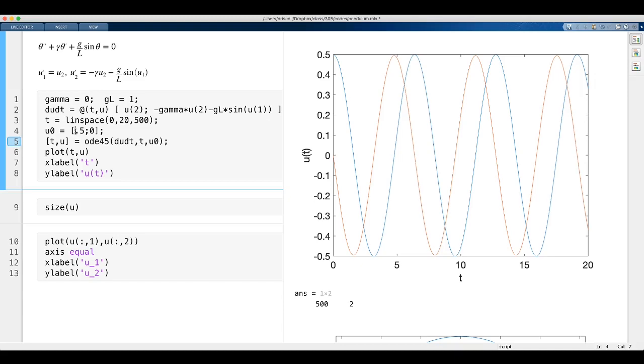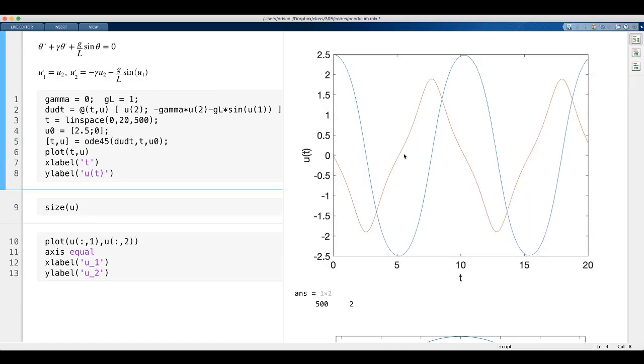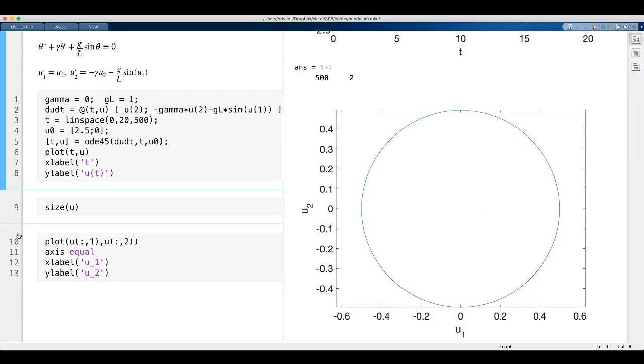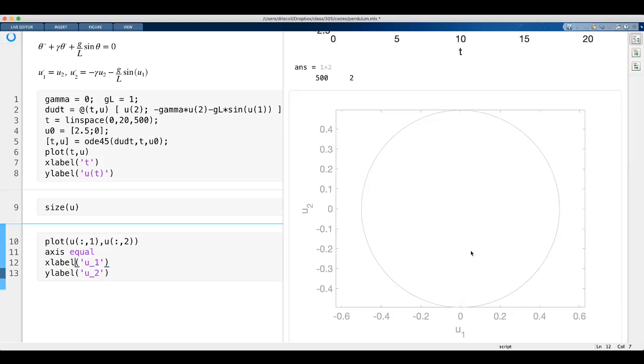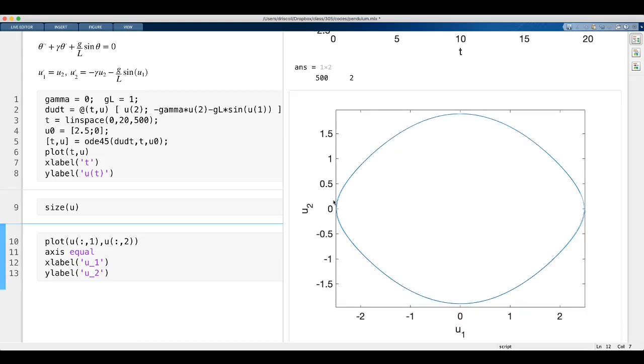But if I use a large angle, let's say I give it a large initial angle, you see we get a solution that looks very different. And in the phase plane, you get this well-known sort of eye shape developing.